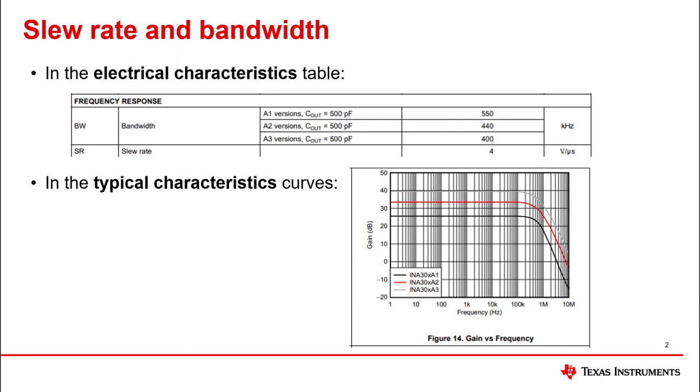Specifications seen here show the specifications typically found in a CSA datasheet. Slew rate is typically limited by the output stage, so in most cases, the slew rate will be the same for all gain options for a family of CSAs. But the bandwidth will be different depending on the gain option of the device.